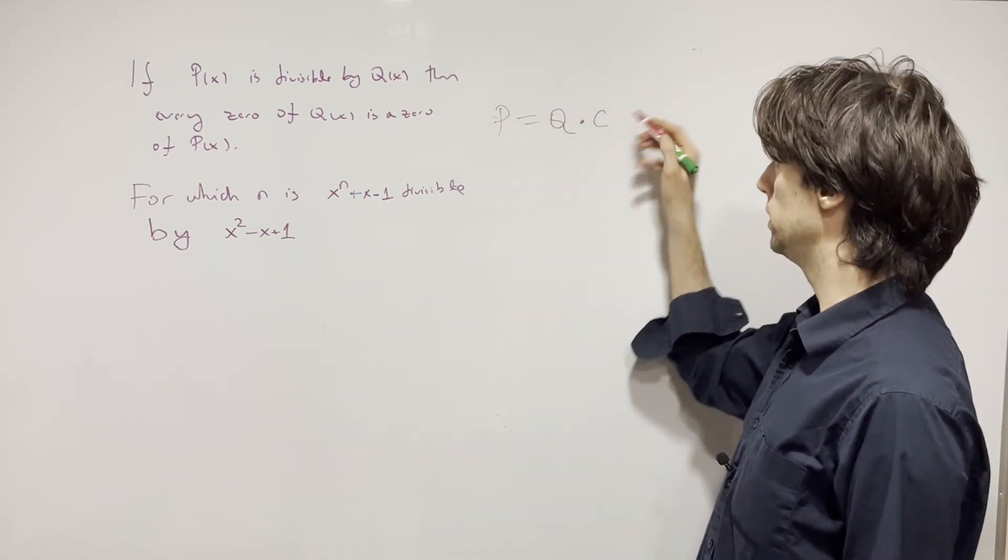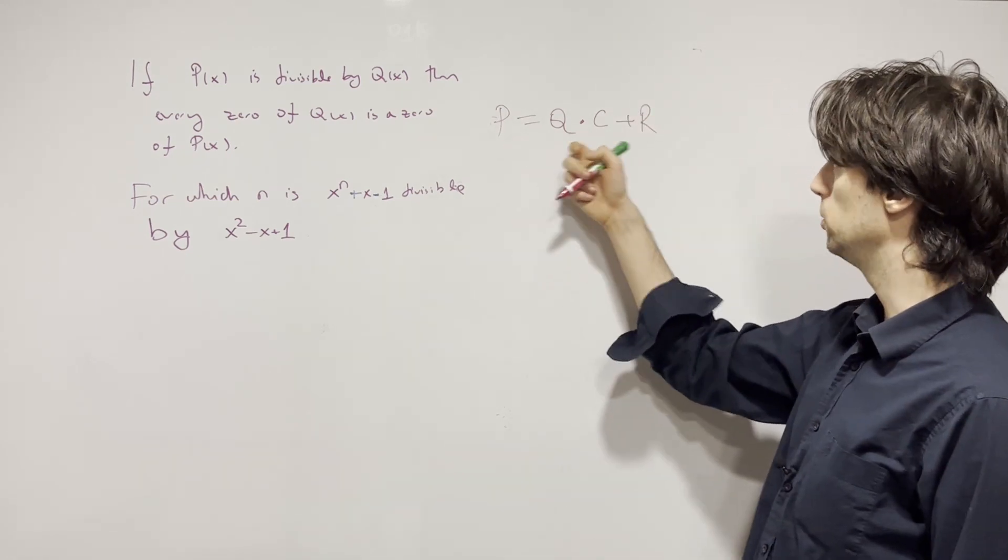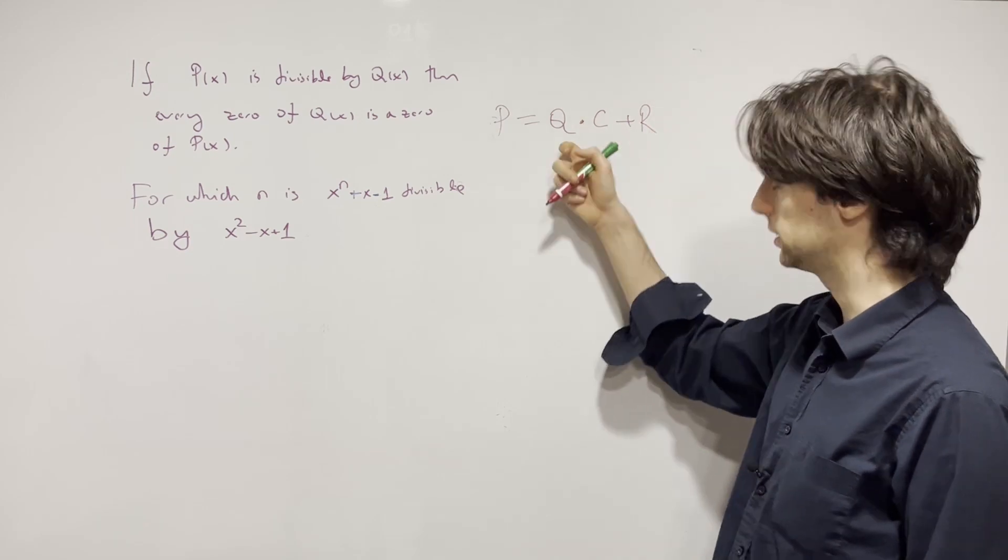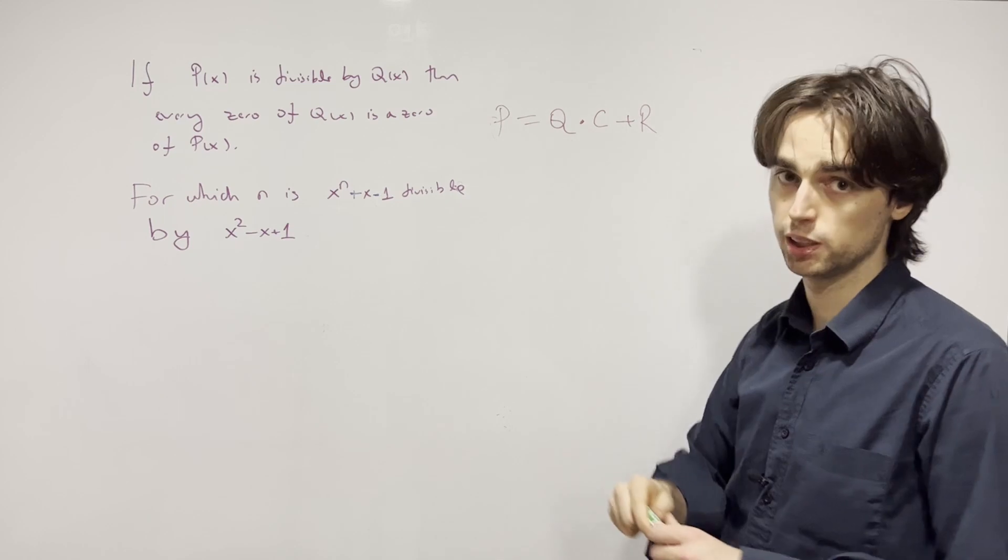If r equals zero in this unique representation, and we've proved there exists a unique representation in general for any p and q, then we have that if r is zero, then q divides p.